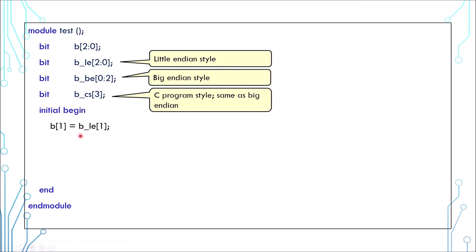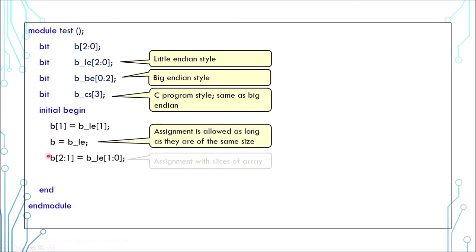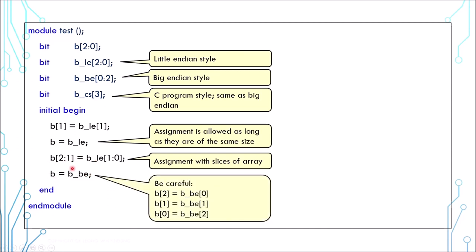You already know that you can assign one element to another. Be aware that the number 1 here means index while the number 3 here means size. You can also assign the whole array to another. You can even assign slices of array instead of the whole array. The only rule you need to follow is that the size must match. For that, you can even assign a big endian array to a little endian one. Although you need to be careful about that because the index is reversed.